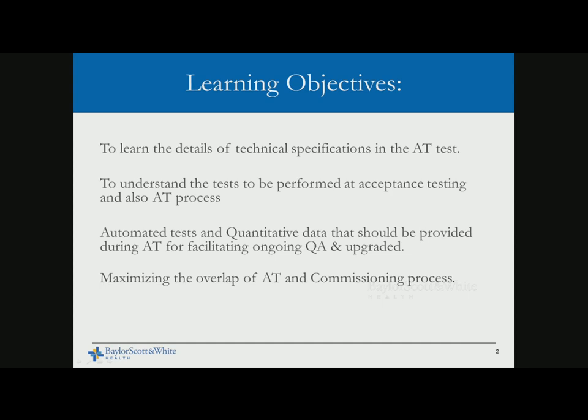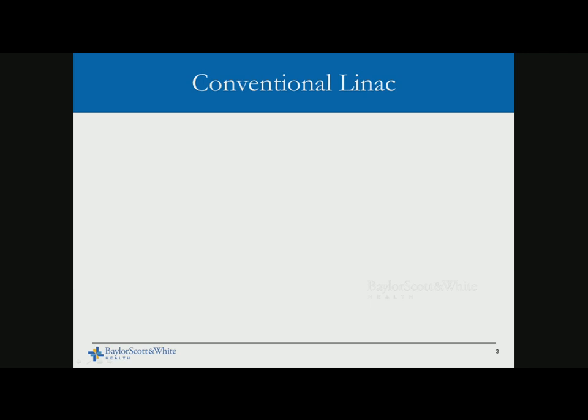We'll cover automated tests and quantitative data that should be provided during acceptance testing for facilitating ongoing QA and upgrades — vendors are not doing a great job with this. We'll discuss recent research on quantitative and automated testing, and also how one can maximize the overlap of acceptance testing and commissioning, since there is always a little confusion about which tests we are trying to do in both.